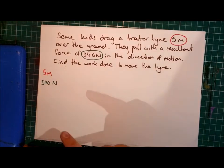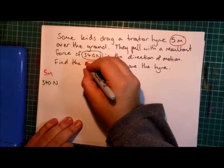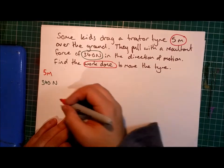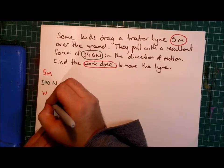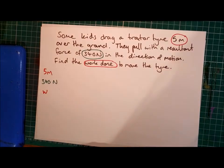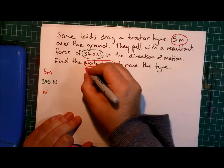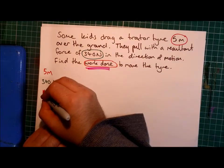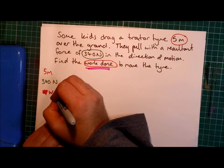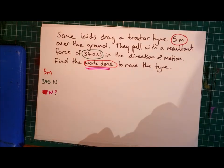In the direction of motion, find the work done to move the tyre. So this is what it's asking you for. It's asking you for the work done. I don't know why I just highlighted that in orange when I said I would be doing it in pink.